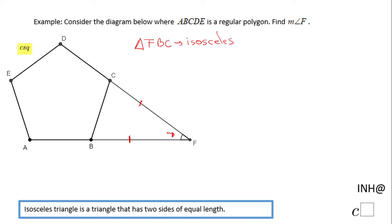How do I know that? These two angles — this one and this one — are both exterior angles of the polygon ABCDE, and they are equal. If these two angles are equal, that means the triangle is an isosceles triangle.